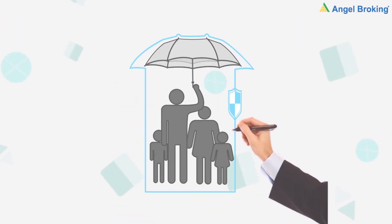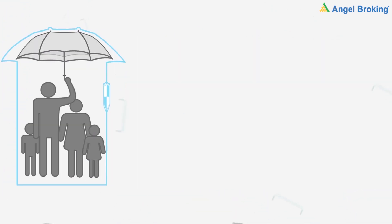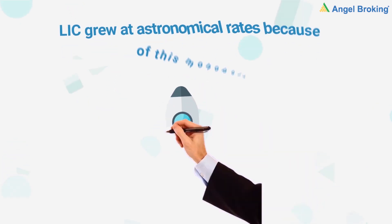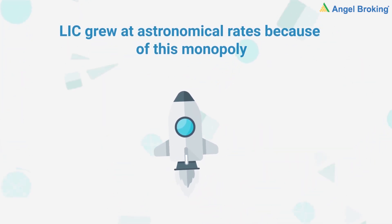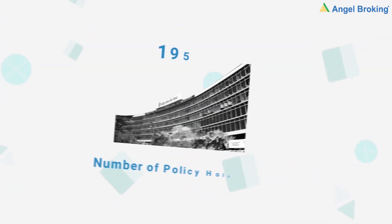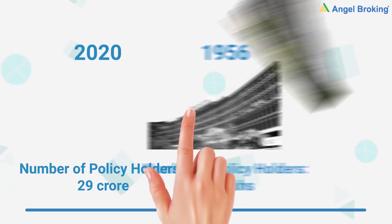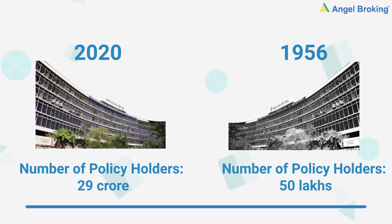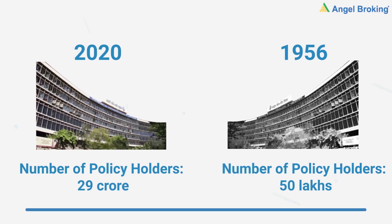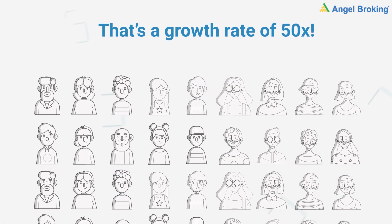Aaj 44 saal tak, LIC ka life insurance industry per monopoly thi. LIC grew at astronomical rates because of this monopoly. When LIC started, it had 50 lakh policyholders. Today, more than 25 crore Indians have life insurance with LIC. That's a growth rate of 50 times.